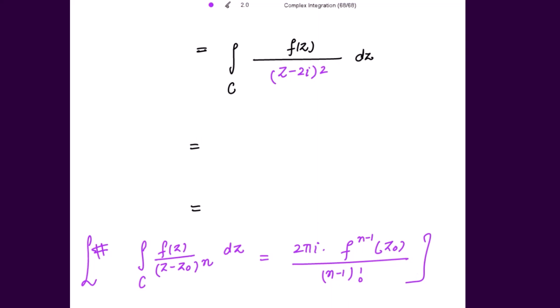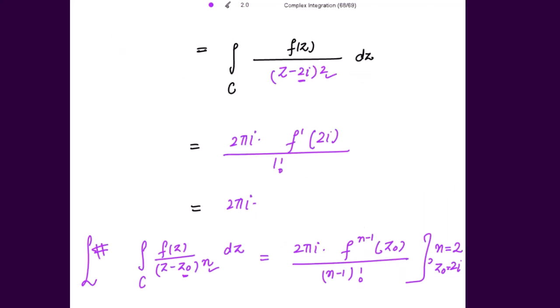Comparing with the formula, n = 2 and z₀ = 2i. So the integral equals 2πi times the first derivative of f(z) at z₀ = 2i, divided by 1! = 1. We already calculated f'(2i) = 1/(32i). Therefore the integral equals 2πi × (1/32i) = 2π/32 = π/16, which is the required solution.